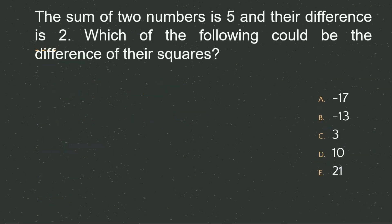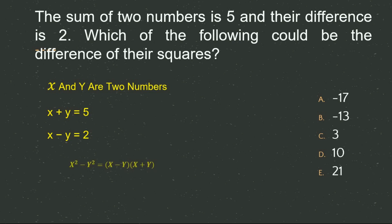The next question: the sum of two numbers is 5 and their difference is 2. Which of the following could be the difference of their squares? Let x and y be the two numbers. So x + y = 5 and x − y = 2. Using the formula x² − y² = (x − y)(x + y), we get 2 × 5 = 10. So D option is the correct answer.